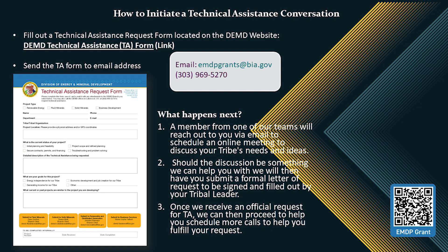If you are interested in learning more about our technical assistance offerings, the best and easiest way to initiate a conversation is to fill out the technical assistance request form located on our website. A member from one of our teams will reach out and schedule an online meeting to discuss your tribe's needs and ideas. You may also give us a call at the number provided on the slide. For assistance with EMDP grants, complete the form and submit to EMDPgrants@BIA.gov. For other requests not related to the EMDP, send the form to the branch most aligned with the subject of your request using the email addresses listed at the bottom of the form.